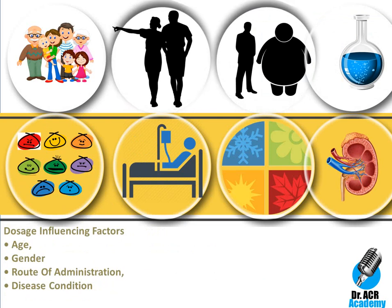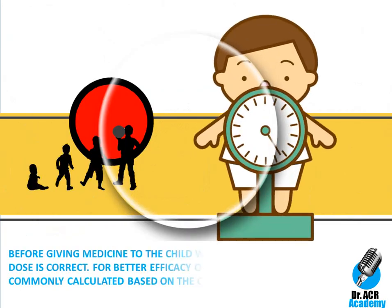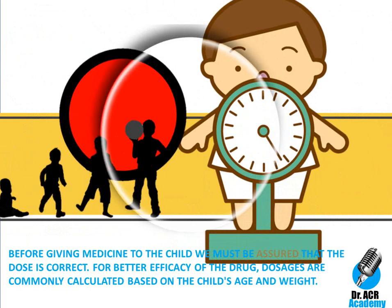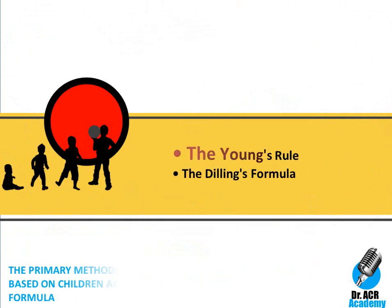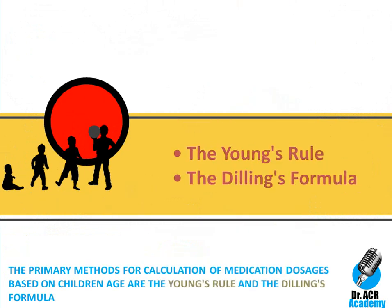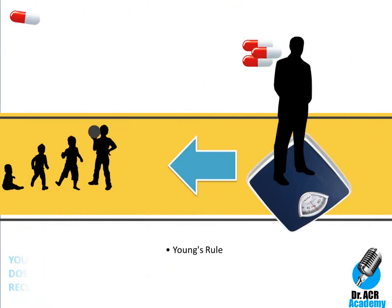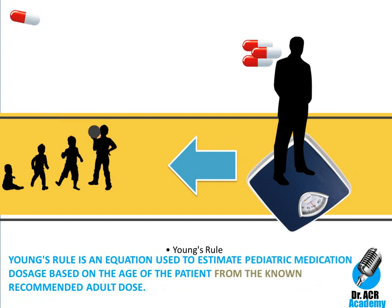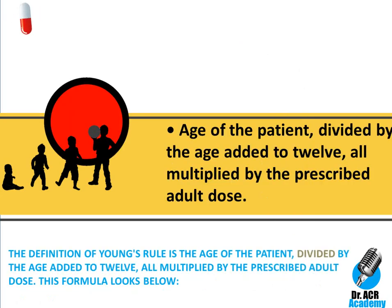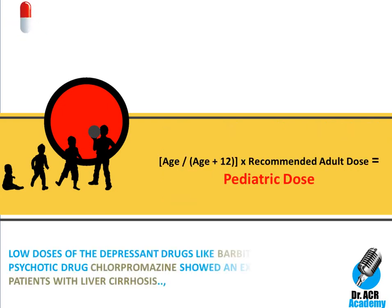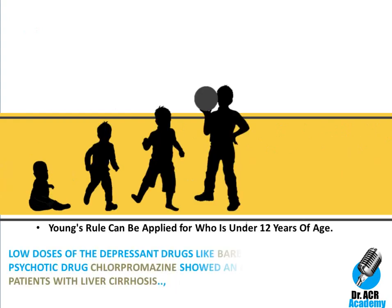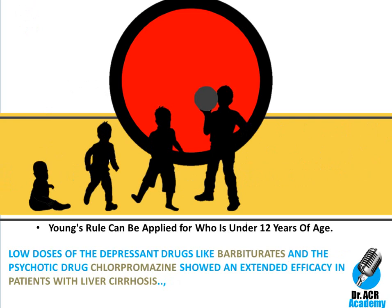Before giving medicine to a child, we must ensure the dose is correct. For better efficacy, dosages are commonly calculated based on the child's age and weight. The primary methods for calculating medication dosage based on a child's age are Young's Rule and the Dilling's formula. Young's Rule is an equation used to estimate pediatric medication dosage based on the age of the patient from the known recommended adult dose. The formula is: Age / (Age + 12) × recommended adult dose = pediatric dose. Young's Rule can be applied when the patient's weight is unknown and the patient is under 12 years of age.